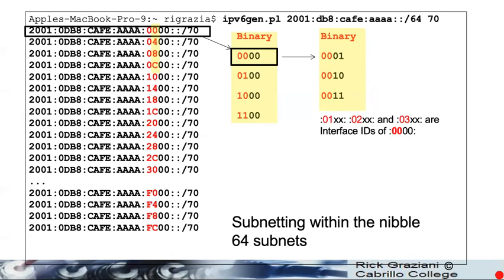But what's happening here — why we have this weird pattern — is remember, as we talked about before, for this one here, if we break out the zero in binary, we have 0-0 as part of the network and 0-1 as part of the interface. So anyway, this would give us interface IDs 1, 2, 3, for example.